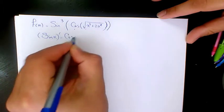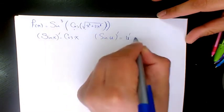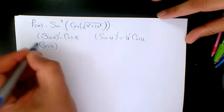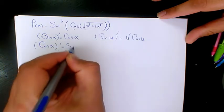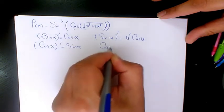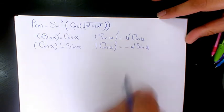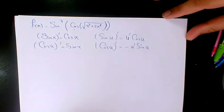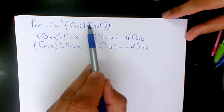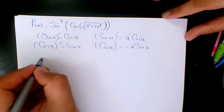...cosine x. The derivative of sine u is u prime cosine u. The derivative of cosine x is negative sine x, and the derivative of cosine u is negative u prime sine u. So based on that, it's sine to the power of three of cosine of square root of x cubed plus two x squared.